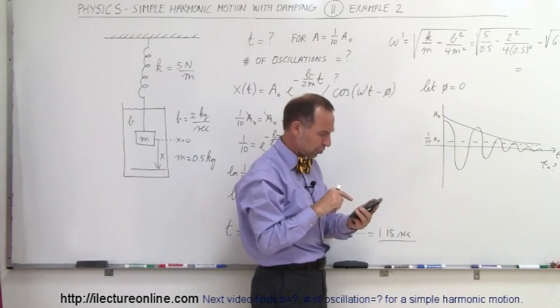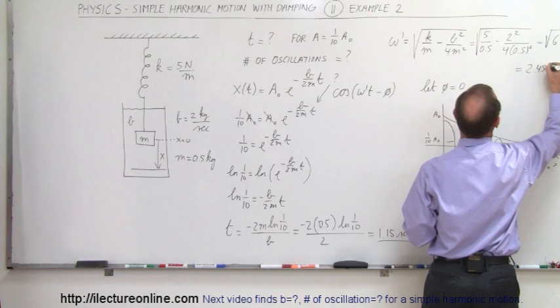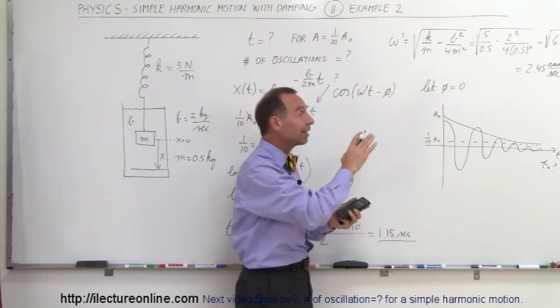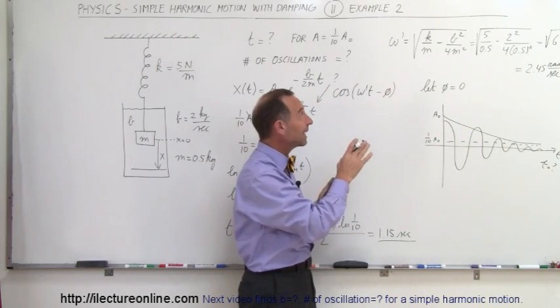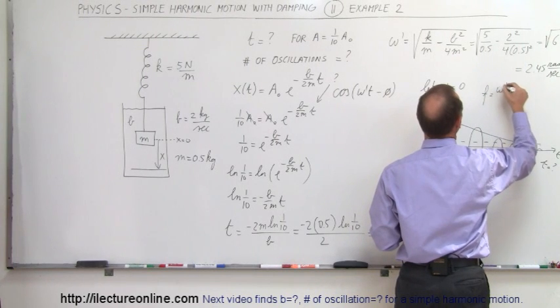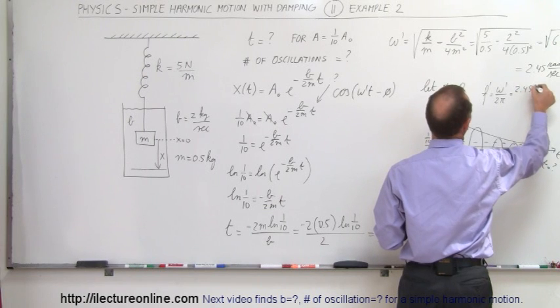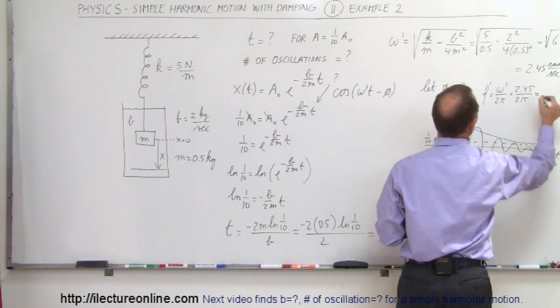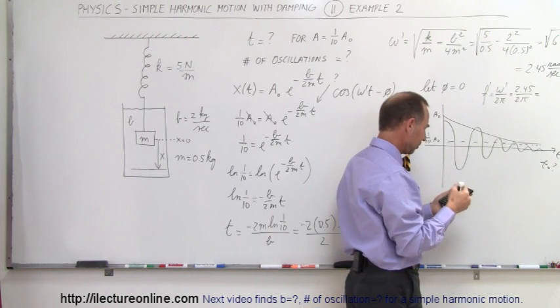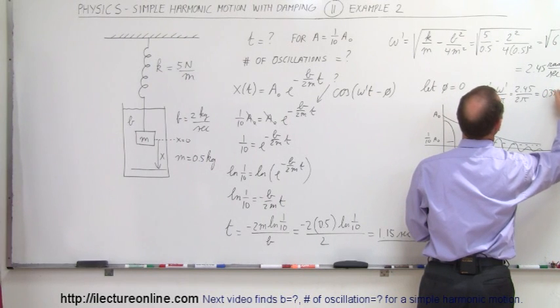And so what is that equal to? Okay, 6, take the square root. We get 2.45. So 2.45, that would be radians per second. And from that, we can find the frequency, because that's not the frequency of oscillation. That is actually the angular frequency. So the frequency is equal to omega prime divided by 2 pi, which is equal to 2.45 divided by 2 pi, which is equal to... So divide by 2, divide by pi equals... That's 0.39, 0.39 hertz.